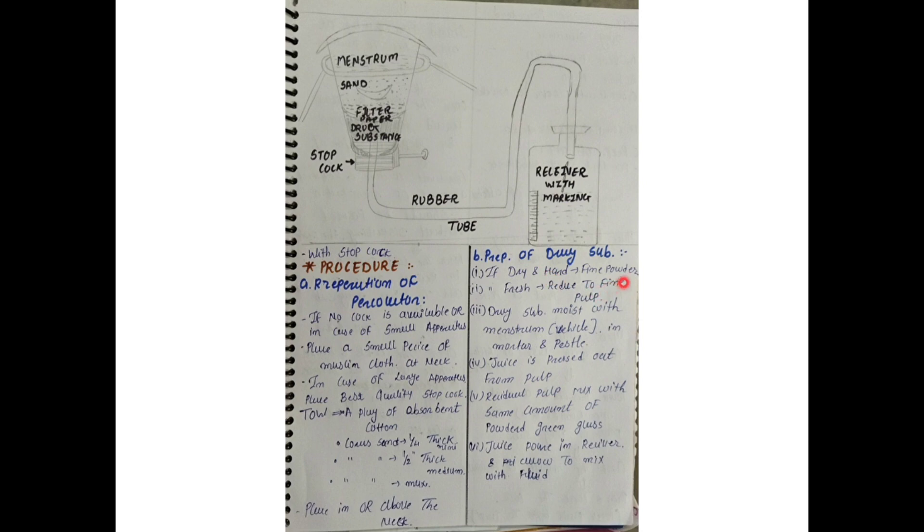Now we will prepare the drug substance. There are two cases. One is when the drug substance is dry and hard — we grind it to a fine powder. The other case is when it is fresh and pulpy — we reduce it to a fine pulp in a mortar and pestle. The drug substance is moistened with the menstruum in the mortar and pestle. For the pulp, we add a little alcohol so there is no free juice, and our pulp is made.